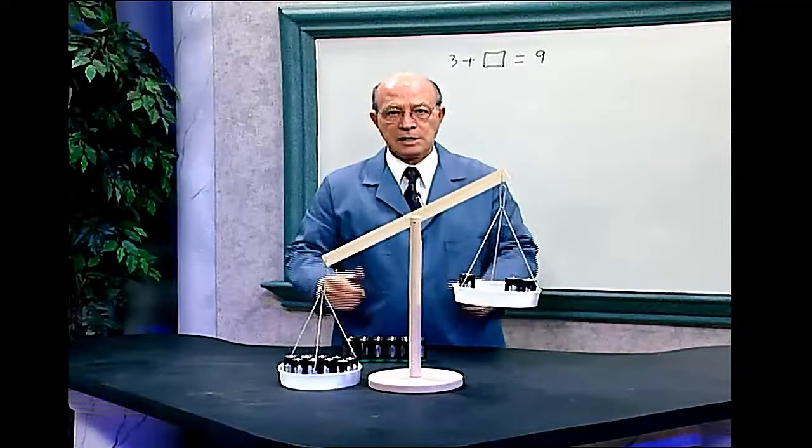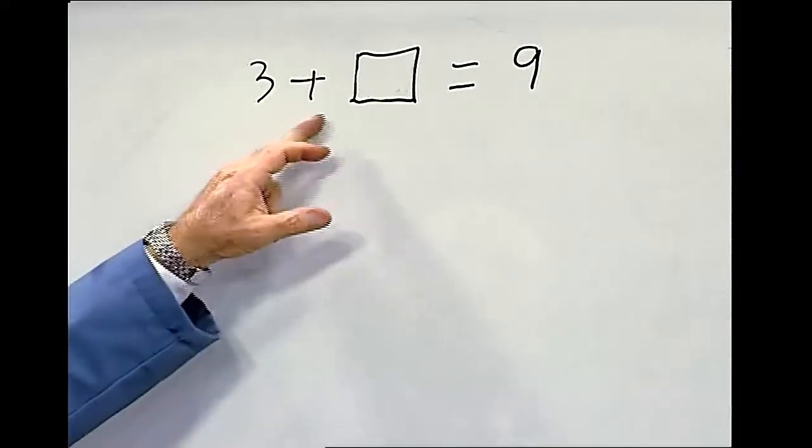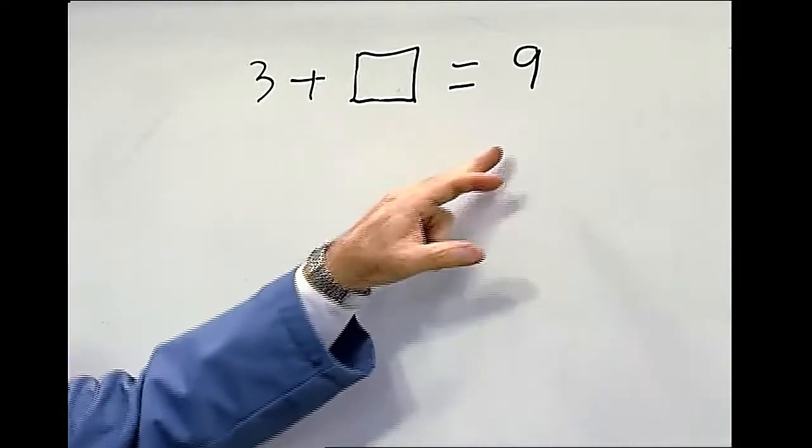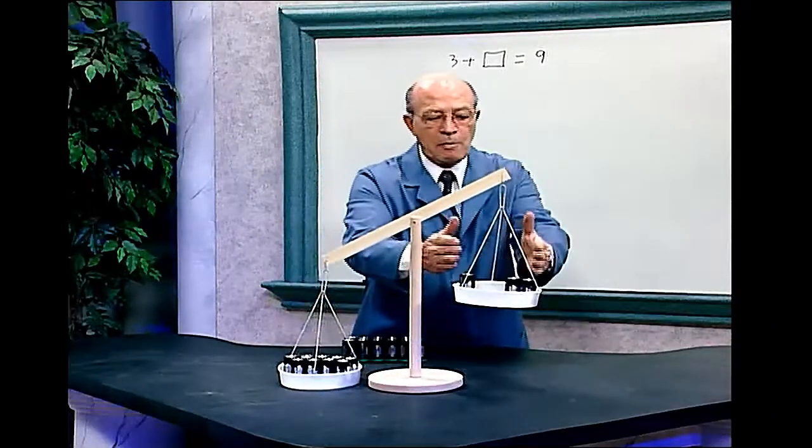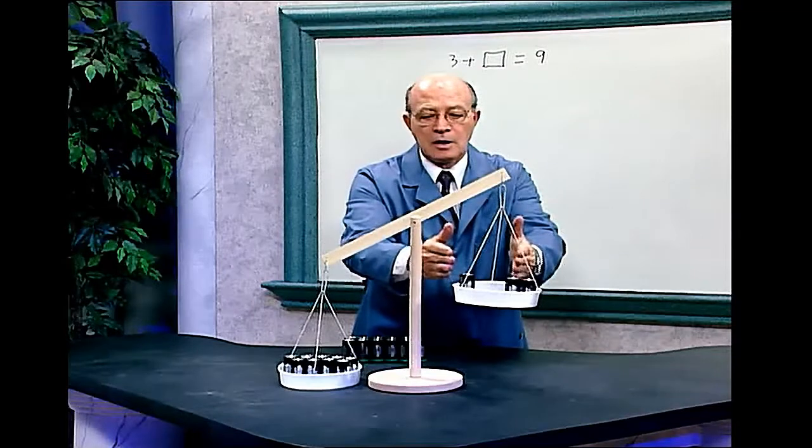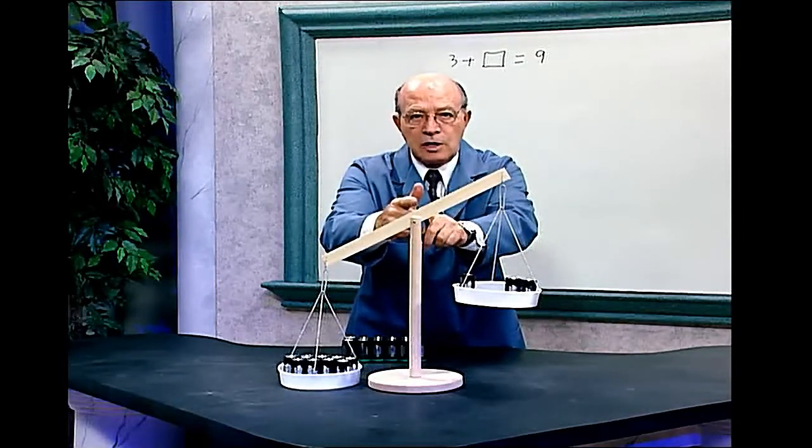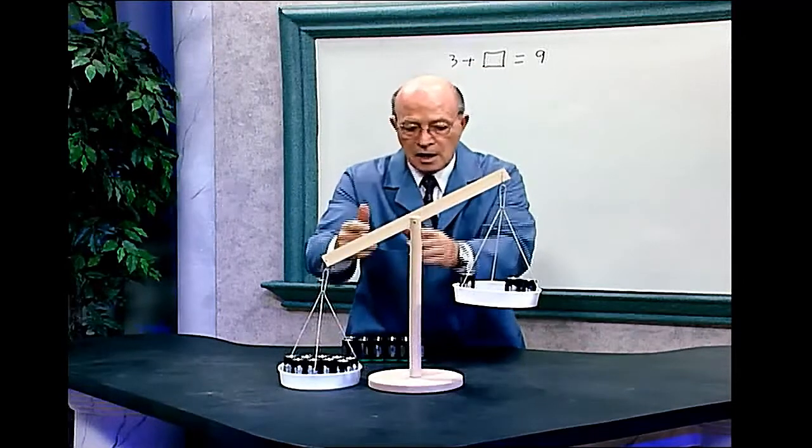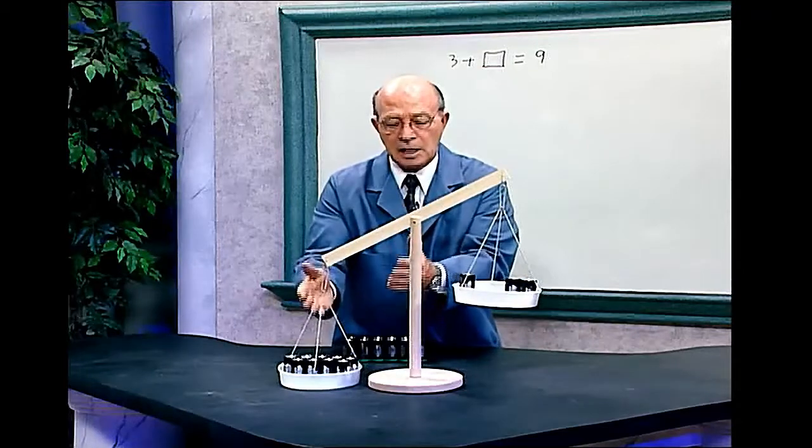This is a balancing scale. We have a problem on the board: 3 plus blank equals 9. I have 9 batteries in here, 3 batteries over here. And this is the middle, the fulcrum or equivalent to the equal sign. How many batteries do we have to place in this side of the scale to make this scale equal?